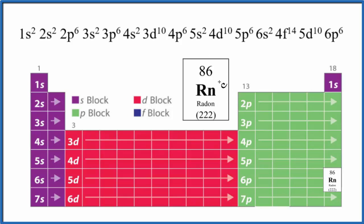So we have 86 total electrons. When we write the electron configuration for Rn, I've already written it up here and these numbers, when we add all these up, they're going to equal that 86.